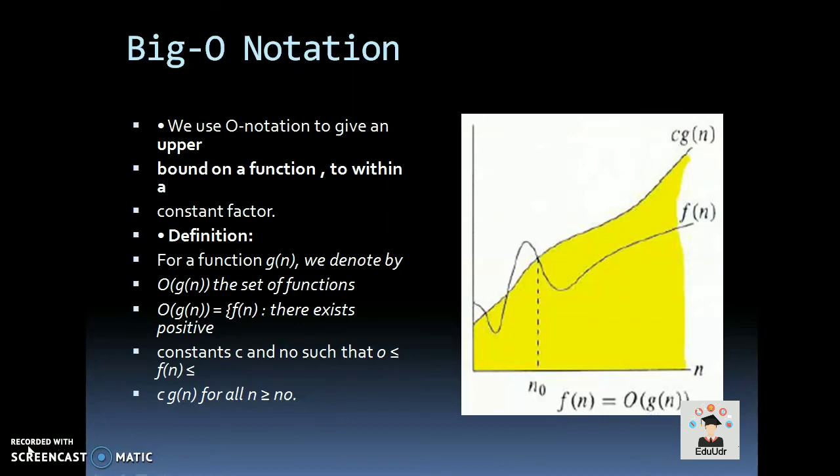Big O notation: We use Big O notation to give an upper bound of a function to within a constant factor. Definition: for a function g(n), we denote O(g(n)) as the set of functions where f(n) ≤ c·g(n) for all n ≥ n0. In simple words, c·g(n) will be the upper bound of f(n). This means f(n) cannot go beyond c·g(n). As we are only concerned about the worst case complexity of an algorithm, we use Big O notation generally to show the time complexity of any algorithm.